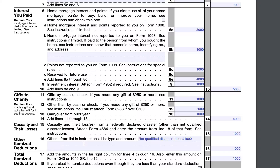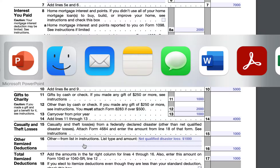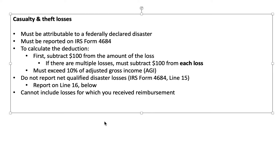In this video, we will be going over how to calculate your itemized deduction for casualty and theft losses. In order to itemize a tax deduction for casualty and theft losses, the loss must be attributable to a federally declared disaster. It also must be reported on IRS Form 4684.